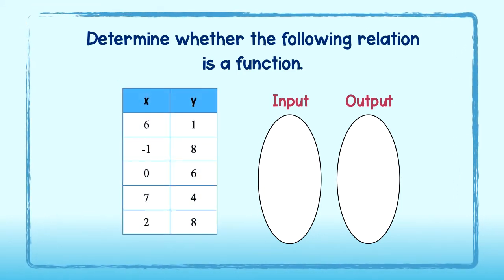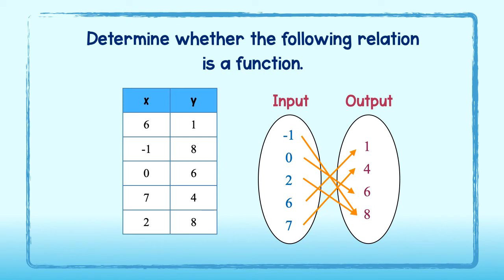Let's try another one. Go ahead and determine whether the following relation is a function. We will write our input values and output values in order without repeating. Then we draw arrows to show the pairs: 6 pairs with 1, negative 1 pairs with 8, 0 with 6, 7 with 4, and 2 pairs with 8. Since there is only one arrow stemming from each input value, this relation is a function. Now, you may say — wait — I see two arrows pointing to this one y value. However, this is just fine. The definition of a function clearly states that x values can only have one y value, so we are not at all concerned that this y value is paired with more than one x value.